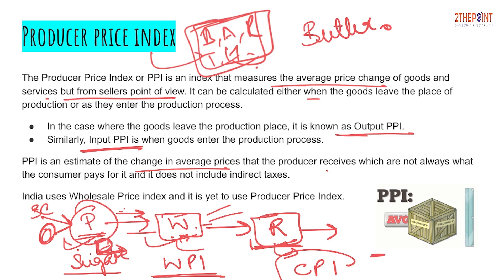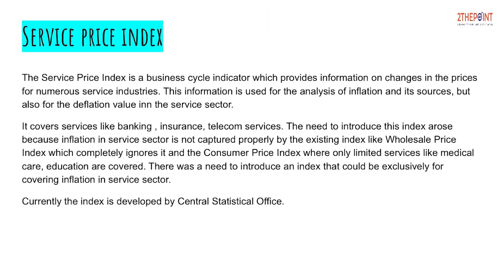India uses CPI as the measure of inflation. Earlier it used WPI, but now it is CPI. There are discussions about whether India should consider PPI as a measure of inflation, but as of now CPI is considered the measure of inflation in India.